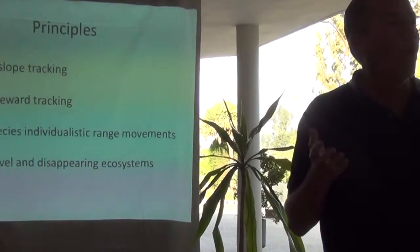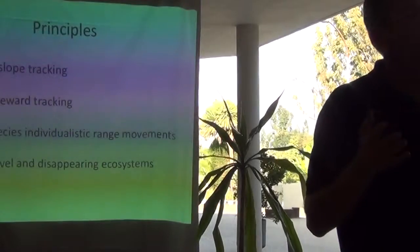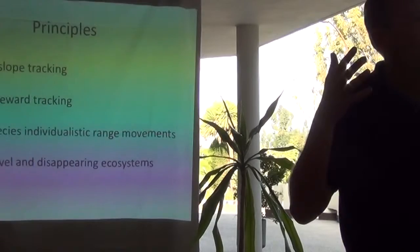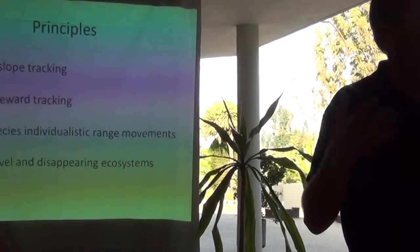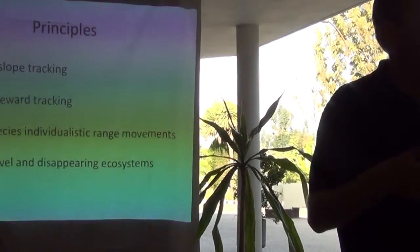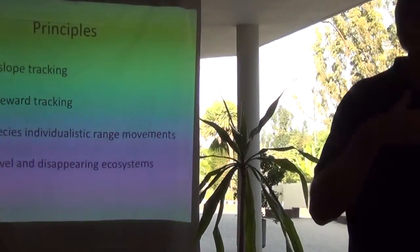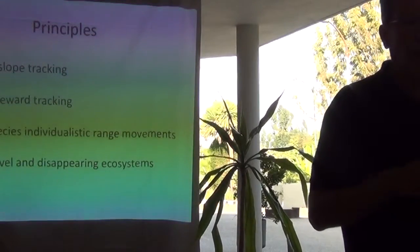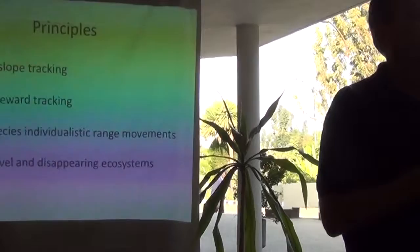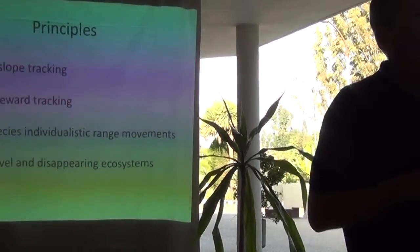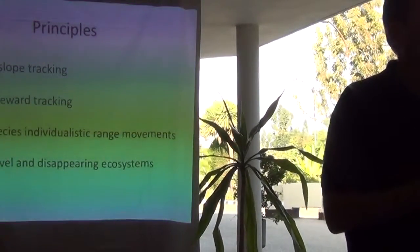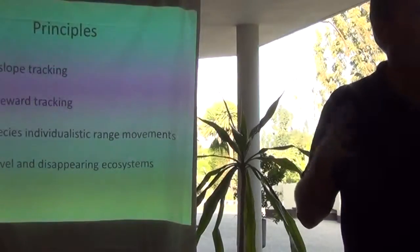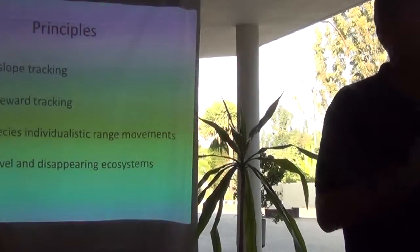The second principle is poleward tracking, or latitudinal tracking — the same idea. As we looked at the CAPE, species are going to try to track those suitable climates, moving towards cooler regions, which means towards the poles — north in the northern hemisphere, south in the southern hemisphere. Both of those tracking expectations — upslope and poleward — are due to species having unique climatic tolerances, and due to them trying to move into colder regions as climates warm, to maintain the climate that they prefer.